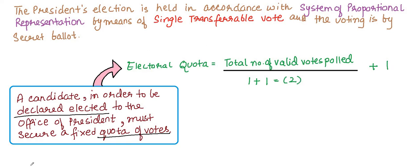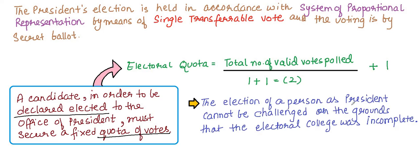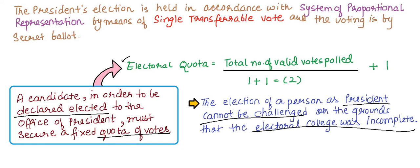The election of a person as President cannot be challenged on the grounds that the Electoral College was incomplete. You cannot say that because certain members were not present, the election of the President is incomplete or invalid.